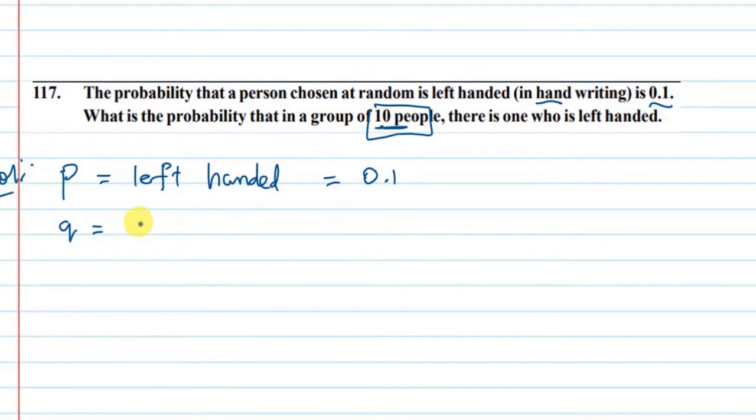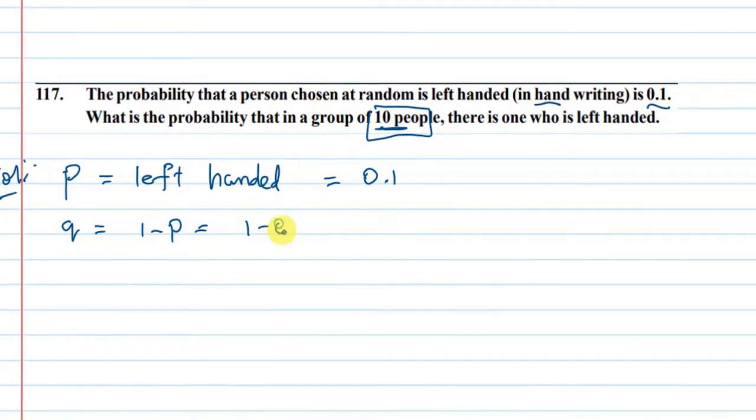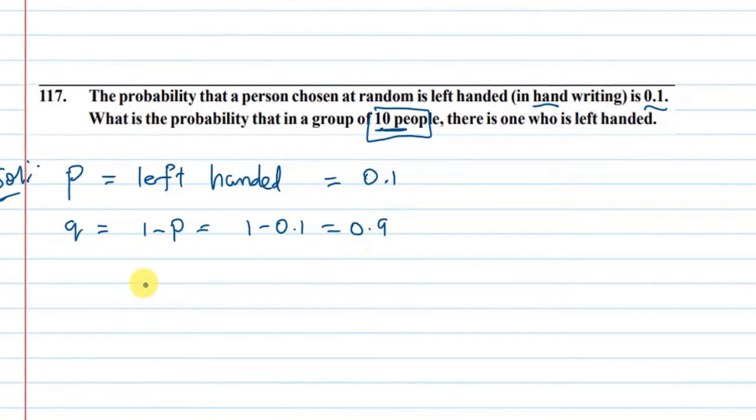If we have q, the formula is 1 minus p. That means 1 minus 0.1, which equals 0.9.